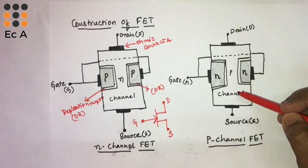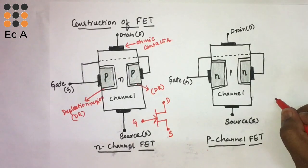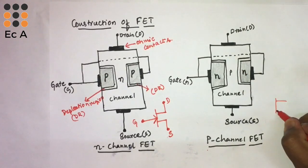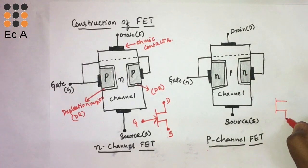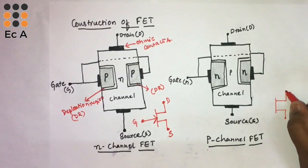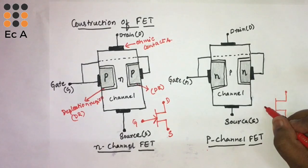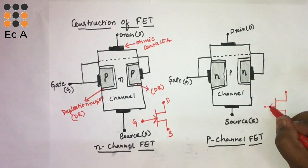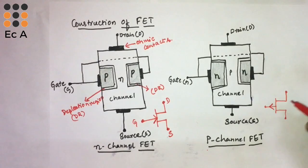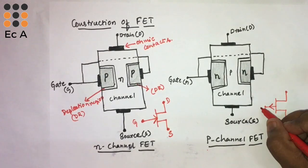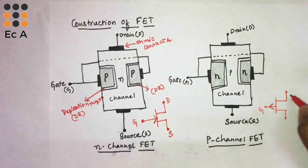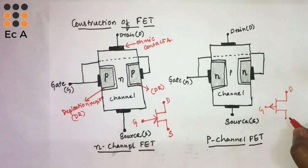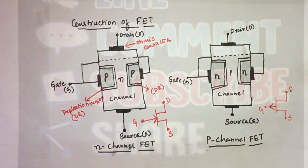The symbol for P-channel FET looks very similar to N-channel FET. The difference is the arrow mark points towards the outside at the gate terminal. This is drain and this is source. Hope you have understood the topic. Thank you.